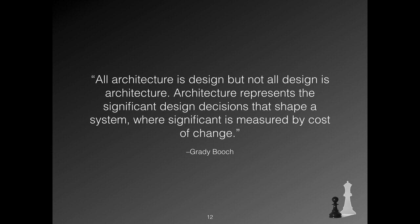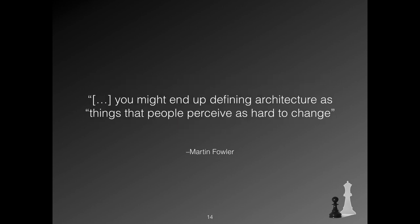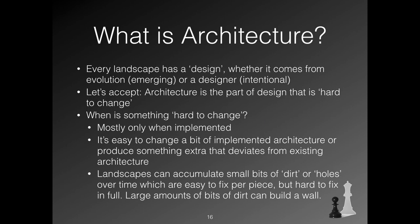And I agree. Other than ISO, Booch actually tells us what 'significant' means: whatever is costly to change. Martin Fowler, another software engineering guru and one of the authors of the Agile Manifesto, has said the same — architecture is things that are hard to change. So what is architecture? Every landscape has a design, and it's generally a mix of emerging and intentional design. Often the intentional design choices in solutions end up being emergent design choices elsewhere in the enterprise.